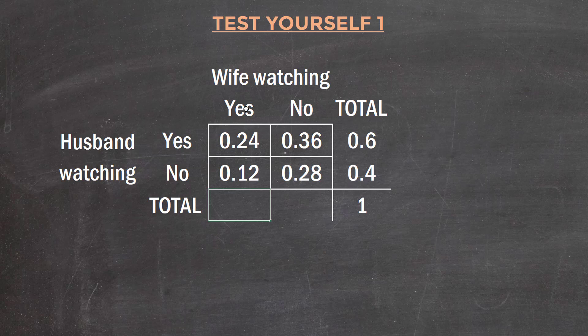Then we can total each column. So 0.24 plus 0.12 equals 0.36, and these two sum to 0.64.